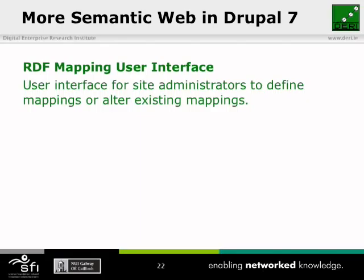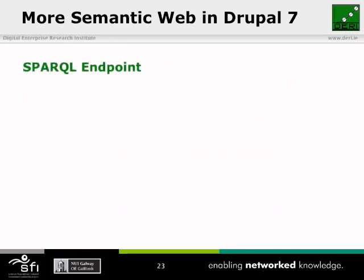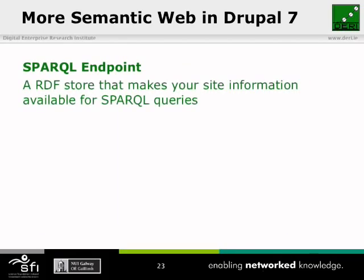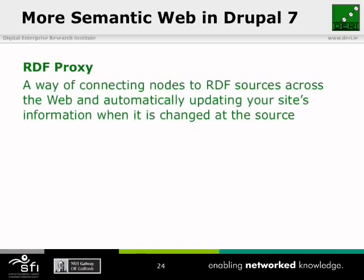There's also a lot of great functionality coming in contributed modules for Drupal 7. There's the RDF mapping user interface, which provides a way for site administrators to find mappings for content types they've created or alter existing RDF mappings. This will work a lot like RDF CCK did in Drupal 6, providing suggestions of terms for your classes and properties based on popular vocabularies such as FOAF and SIOC. There's also the SPARQL Endpoint, which brings all of your RDF content together into one page so other sites can query your content just by visiting that one SPARQL Endpoint.